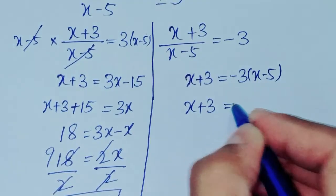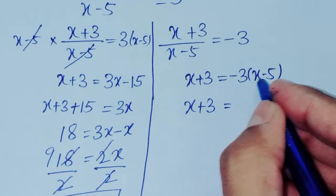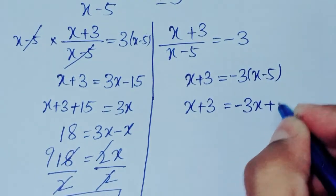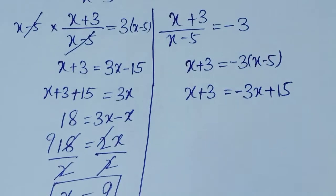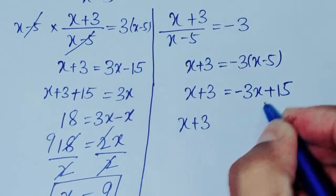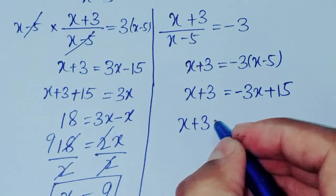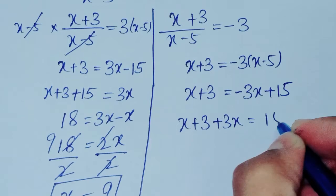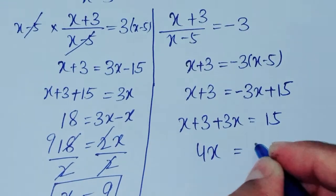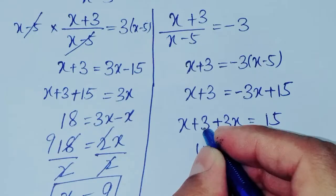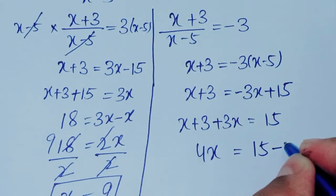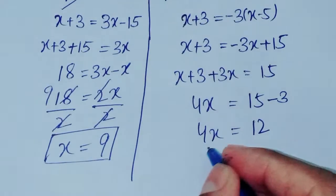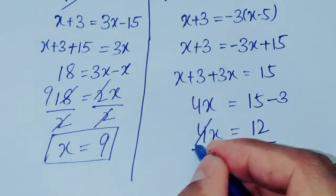Case 2: x plus 3 over x minus 5 is equal to minus 3. Multiplying: x plus 3 is equal to minus 3x plus 15. Shifting minus 3x to the left gives 4x, and shifting plus 3 to the right gives minus 3. So 4x is equal to 12. Dividing both sides by 4, x is equal to 3.